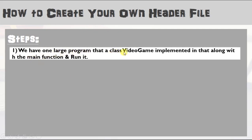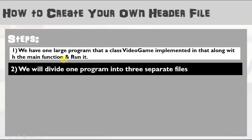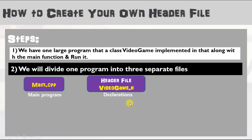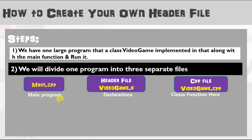There are five steps to follow. First, I will show you one large program that has a class called VideoGame implemented in it, with the main function in the same program. Next, to create our own header file, we will divide the program into three files: main.cpp, videogame.h, and videogame.cpp. The first is main.cpp, which contains the main program statements. The second is the header file videogame.h, which contains all declarations of variables and functions.